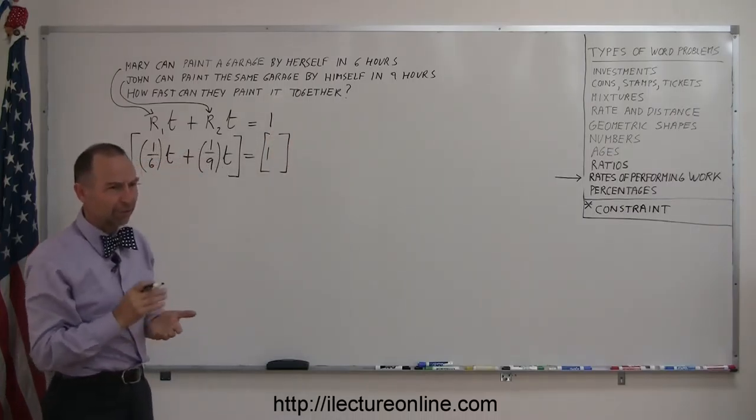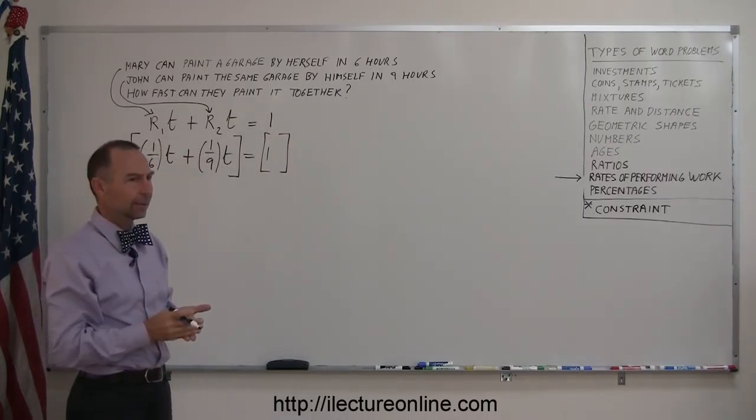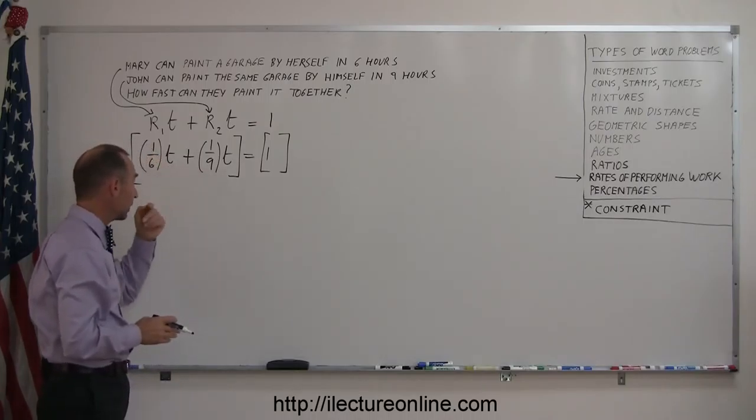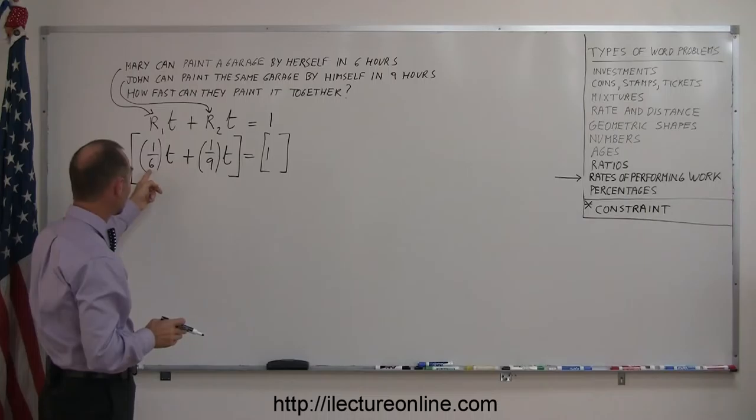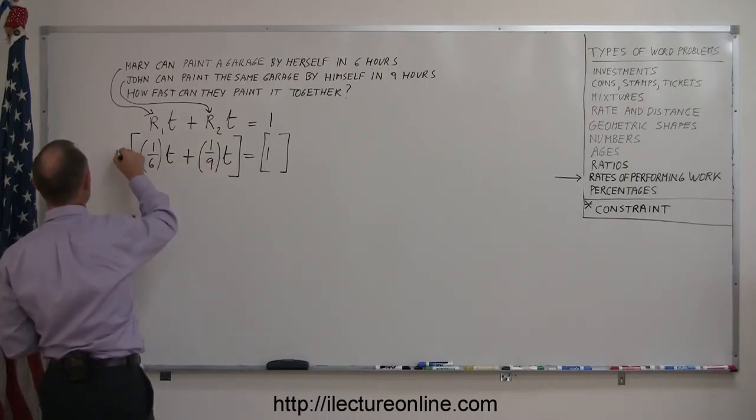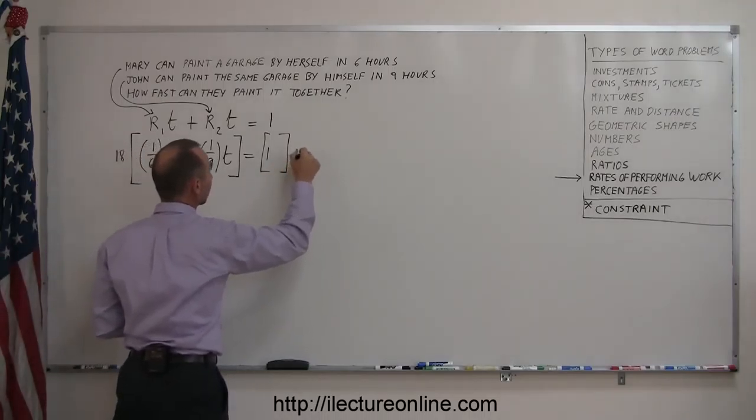Now, what's the lowest common denominator for six and nine? Well, it could be fifty-four by multiplying them together, but since they're both divisible by three, if you multiply six by three, that gives you eighteen, and nine fits into eighteen just nicely, so eighteen would be a good lowest common denominator here.